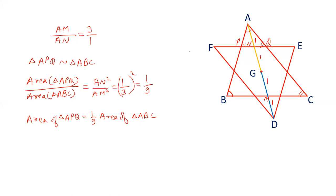We can say that triangle APQ is the same as triangle DXY, because this triangle when rotated forms DXY. Similarly, triangle EQR is congruent to triangle BSY. Each of these small corner triangles can be proved to be 1/9th of the area of the original triangle ABC.